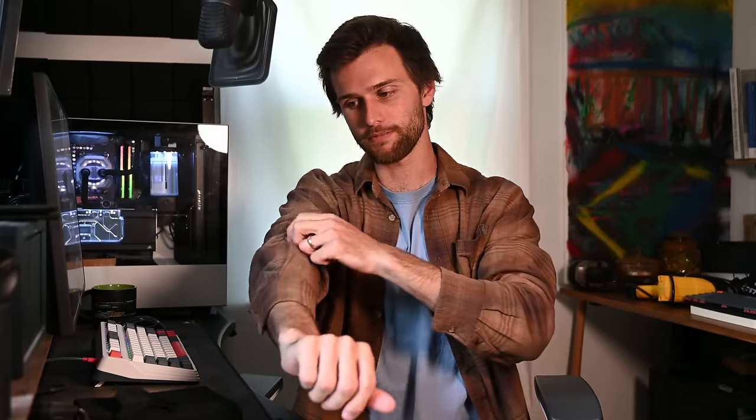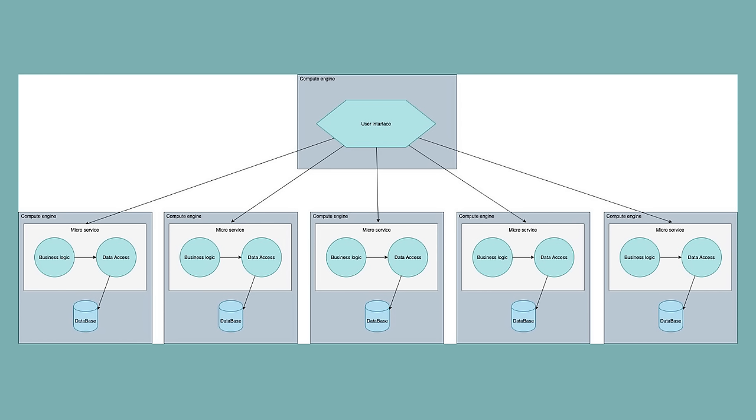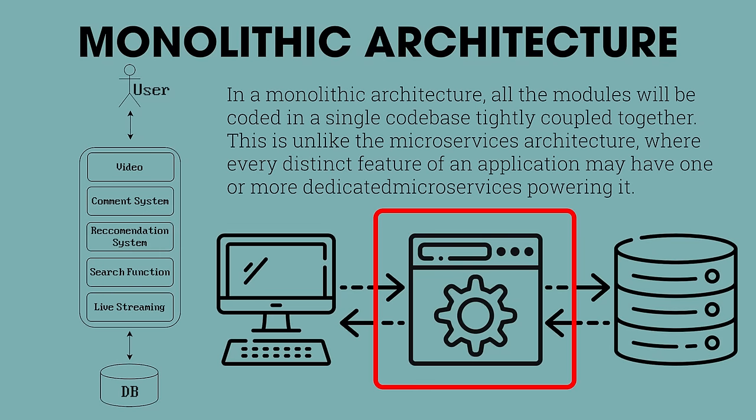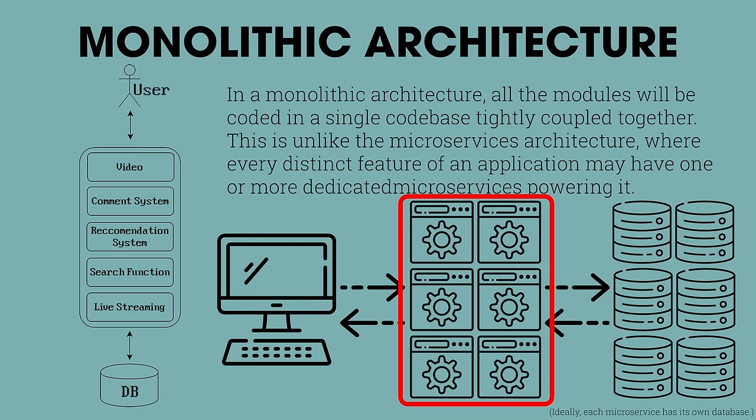So now we have the next level of architecture. I just wanted to give you architecture that is actually comparable to each other. This is where monolithic, microservices, and serverless come into play. In a monolithic architecture, all the modules will be coded in a single codebase tightly coupled together. This is unlike the microservices architecture where every distinct feature of an application may have one or more dedicated microservices powering it. This is how basically everything used to be built because it's simple, it's fast, and you can easily deploy it. However, there are a lot more negatives than positives because it's not scalable, not reliable, and there are single points of failure. Every single time you add a single line of code, you have to redeploy the entire application, and if something breaks, it breaks the entire application.